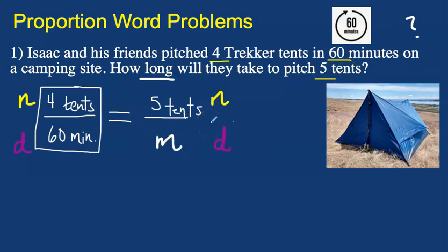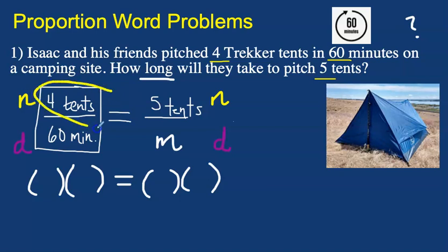Now that we have our proportions set up, we can go ahead and solve. I want you to use cross multiplication today to solve your proportions. So what we're going to do is start by recording our parentheses. And next we multiply across. And then I place that in the parentheses. 4 is being multiplied by m.